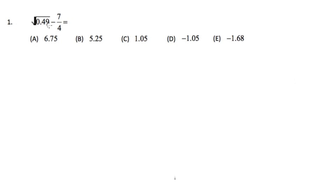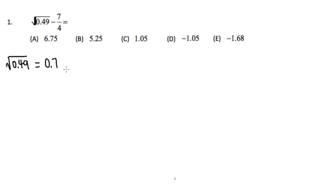Let's begin by figuring out what square root of 0.49 is. Square root of 0.49 — to figure this out, we have to ask ourselves: what times itself will give us 0.49? The answer is 0.7, not 0.07. Square root of 0.49 is equal to 0.7.